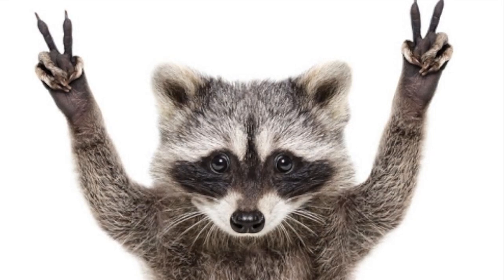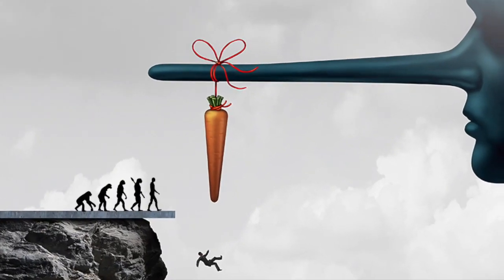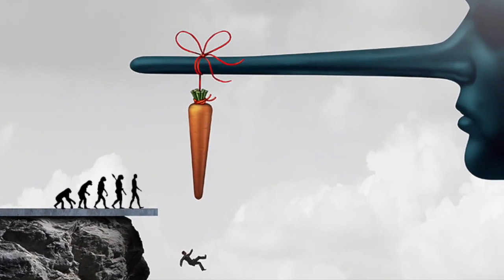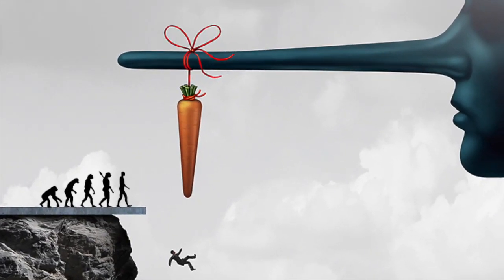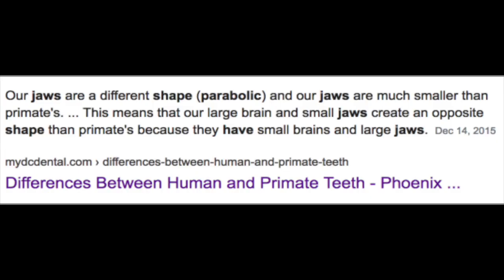What is funny to me is that these five things we share in common are actually vastly different when we look into detail. Marks in 2009 said apes are something that have no tail, a fused tailbone, fused vertebrae, a large brain, and a rotating shoulder. Let's actually look at these things in detail. Our jaw is parabolic in shape — not a single primate's is. So right out of the gate the first similarity, when scrutinized, is very different.